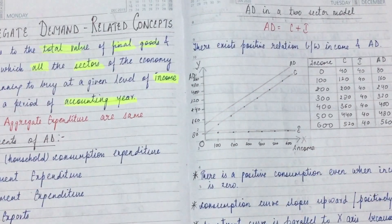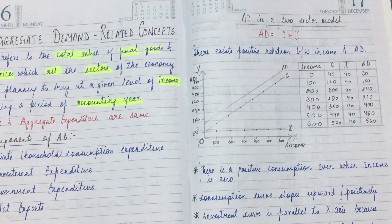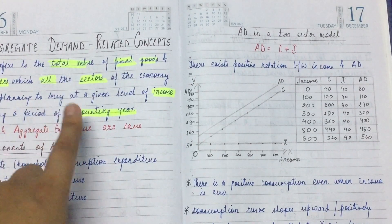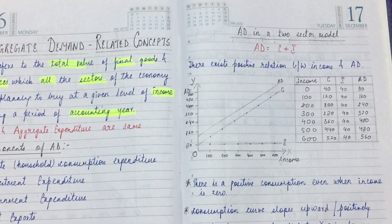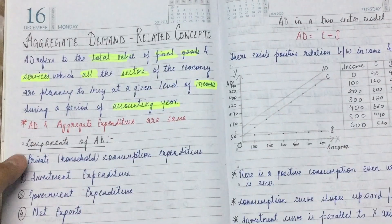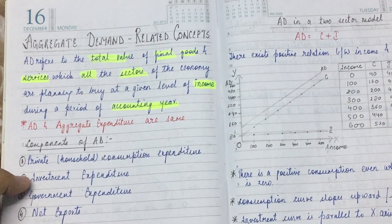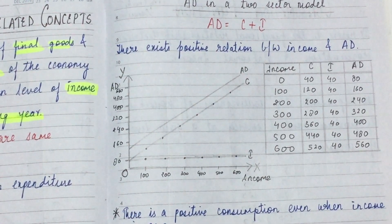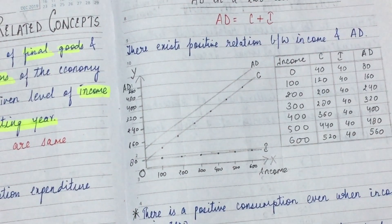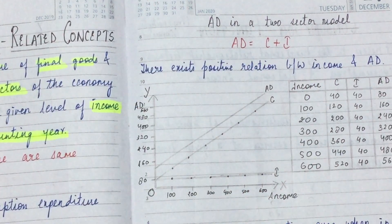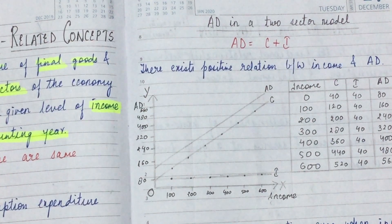Now from an exam perspective, there is an important question: AD in a two-sector model. We have discussed that there are four sectors, but for the CBS exam, only the two-sector model is important. In the two-sector model, we include only two things: first, private consumption or household expenditure, and second, investment from the business sector.